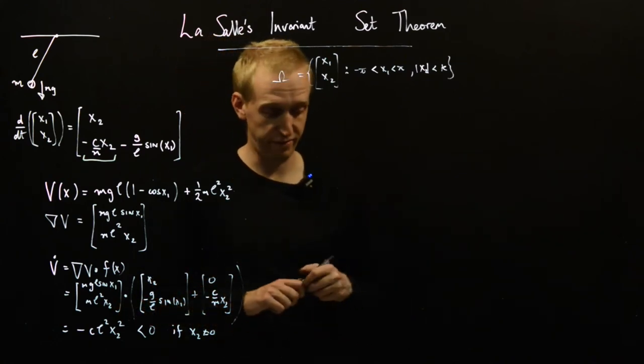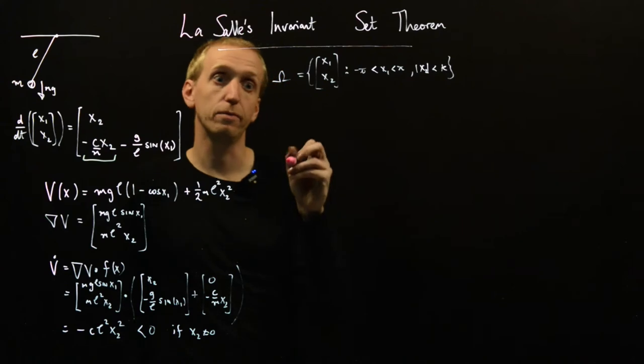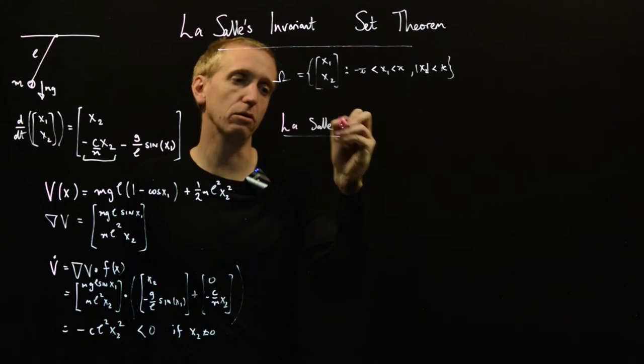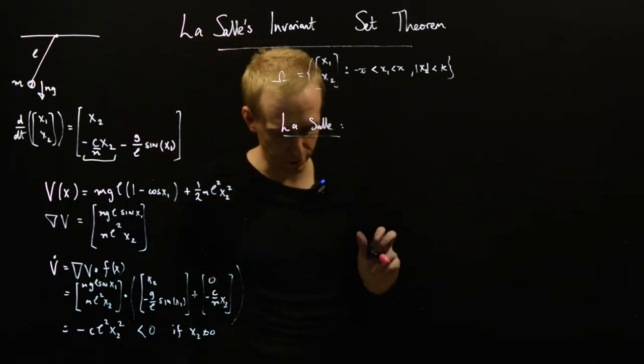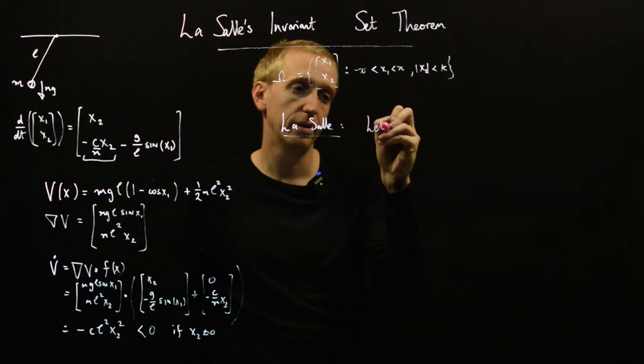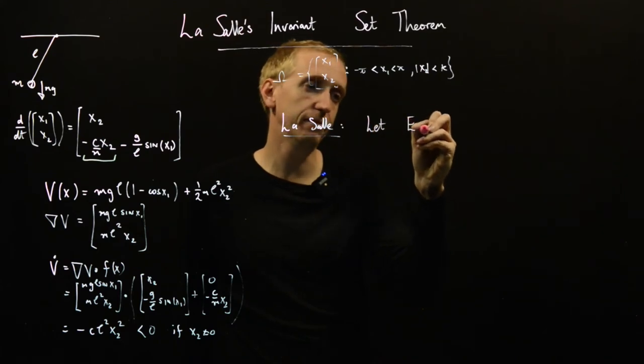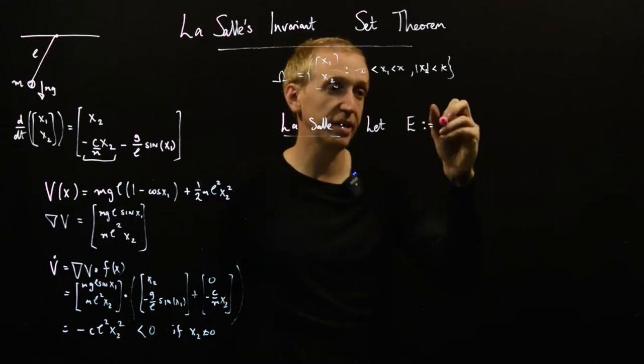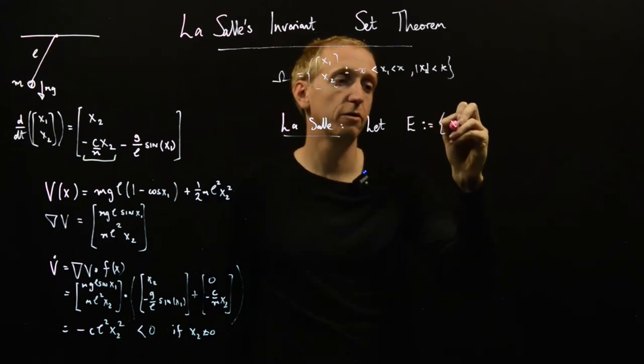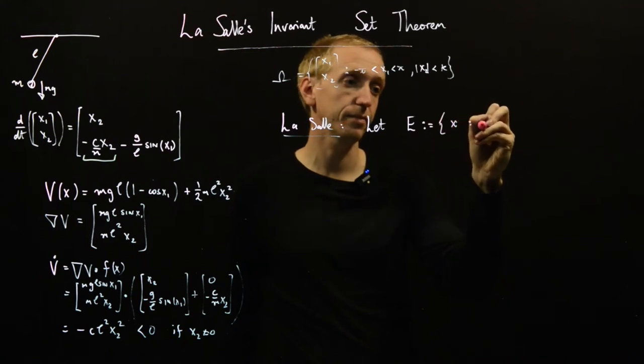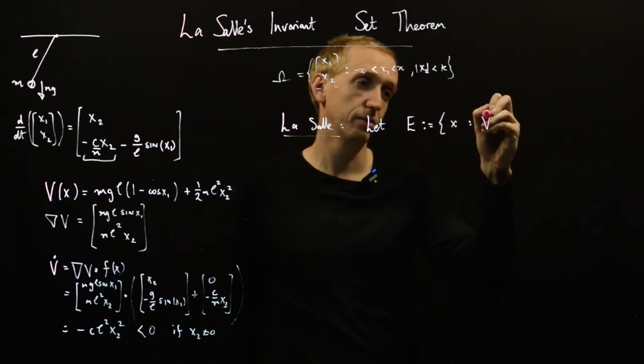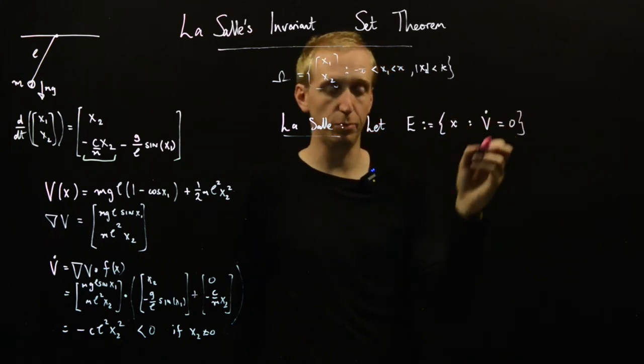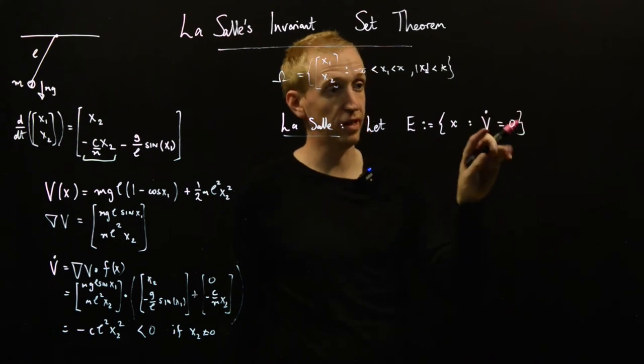So what is the LaSalle Invariant Set Theorem? Let E, so we're going to define some other region of the state space, be the set of points in the state space such that V dot is equal to zero. And we'll give an example illustrating all of these terms soon.